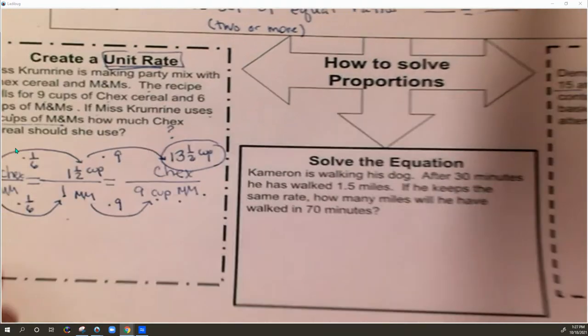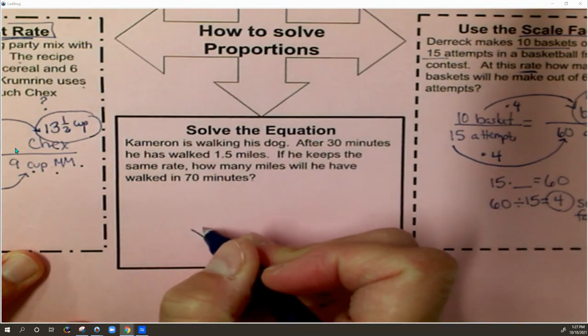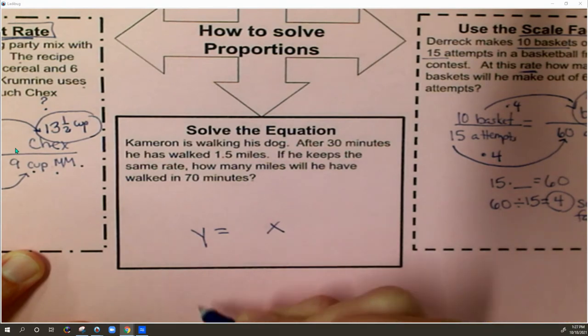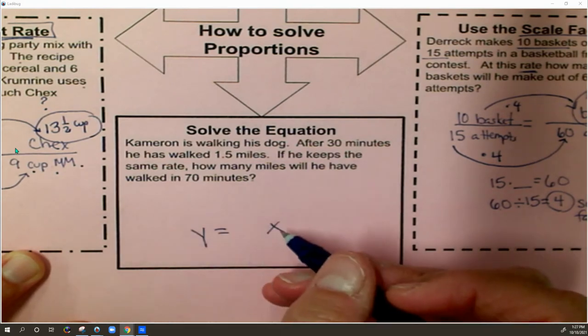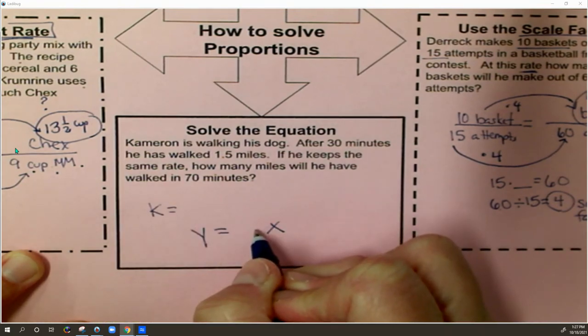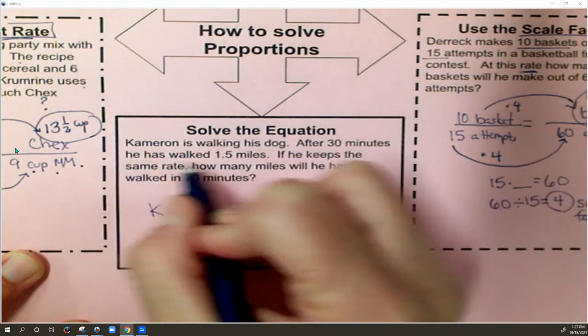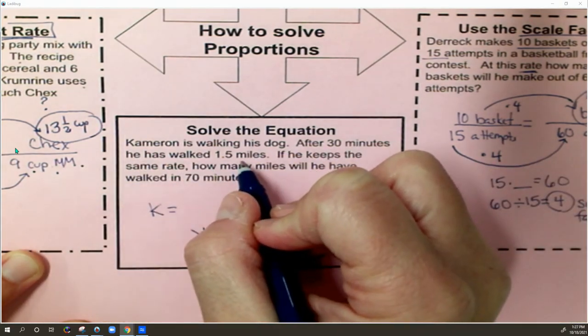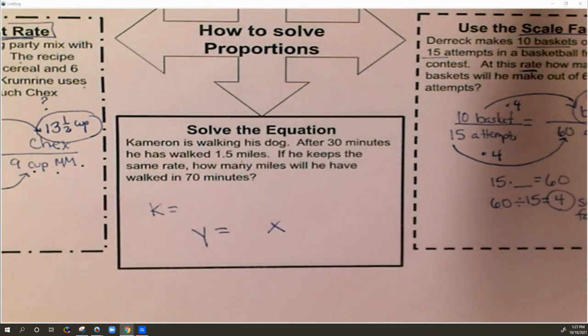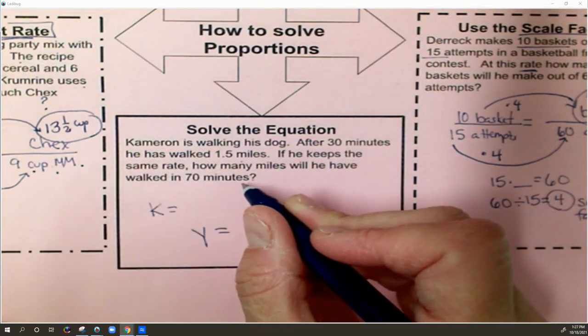Now, that brings me to the last method, which is the equation method. In the equation method, I'm going to have to write an equation. I'm going to write an equation here in the middle. And then I'm going to use that equation to solve to be able to find the answer. So to write the equation, I need my k value, my constant of proportionality that goes here. So here's how I'm going to get it. Cameron is walking his dog. After 30 minutes, he has walked 1.5 miles. If he keeps the same rate, how many miles will he have walked in 70 minutes?